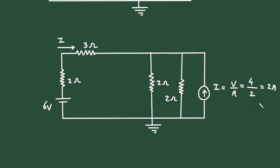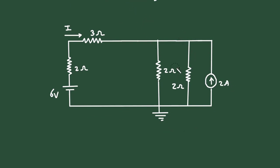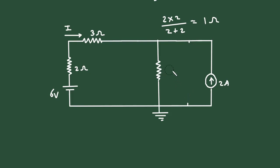Now we can remove this 4 volts from here. The value of current source is 2 ampere. Here we can see this 2 ohm and this 2 ohm are connected in parallel, so we can easily solve this. It will be 2 multiplied by 2 divided by 2 plus 2, so it will be 1 ohm. Let us replace this by 1 ohm.